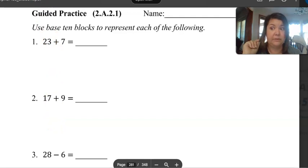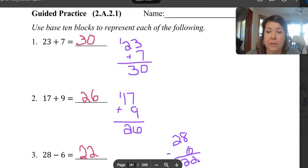Okay, so check your work: 23 plus 7—seven plus three is 10, so you put the zero down, you carry the one, and then you have three in the tens column, so we have 30. Okay, 17 plus 9 is 26. You can see my work here. 28 minus 6—eight minus 6 is 2, and then we're left with 2 here, bring the 2 down, so 28 minus 6 is 22. Is this what you got?